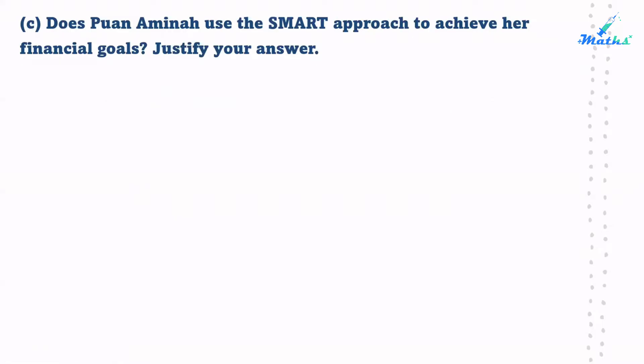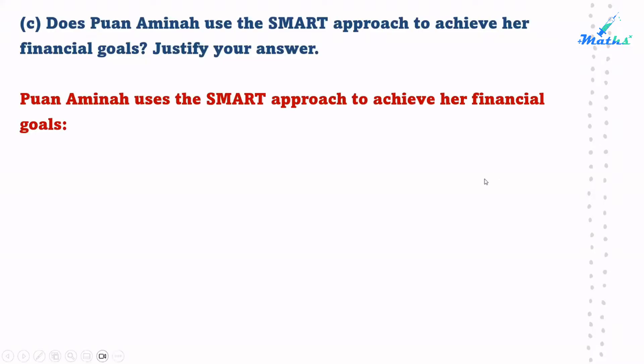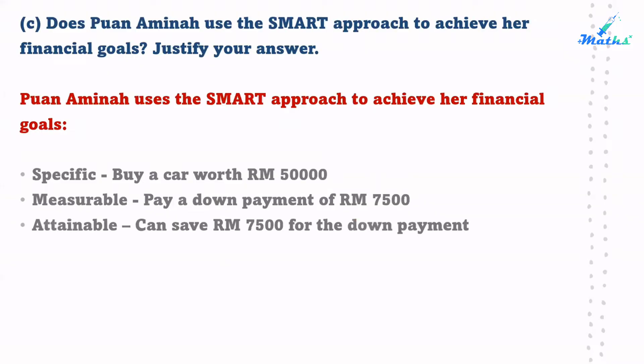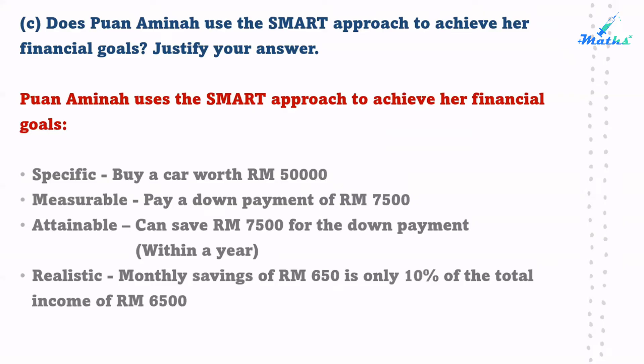Question C: Does Juan Amina use the SMART approach to achieve her financial goal? S — Specific: buy a car worth $50,000. M — Measurable: pay a down payment of $7,500. A — Attainable: can save $7,800 for the down payment within a year. R — Realistic: monthly saving of $650 is only 10% of Juan Amina's total income of $6,500. T — Time-bound: within one year.